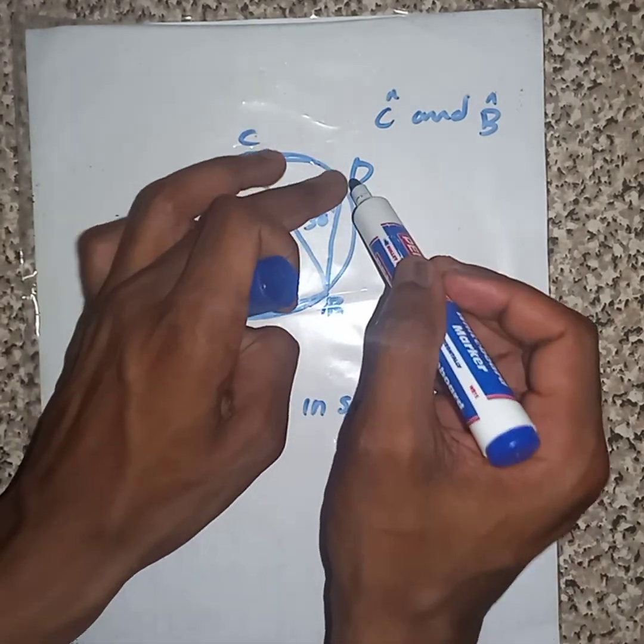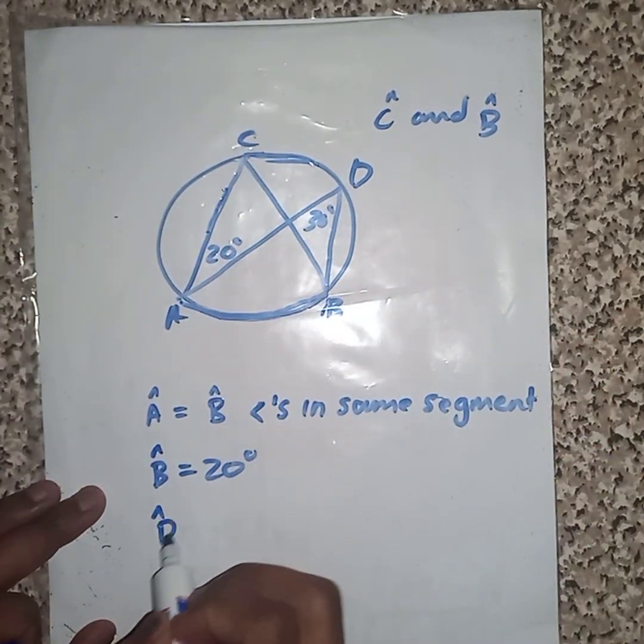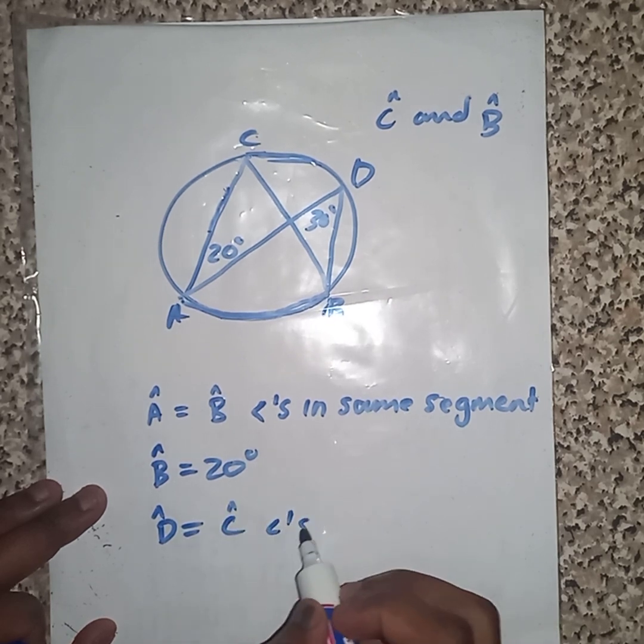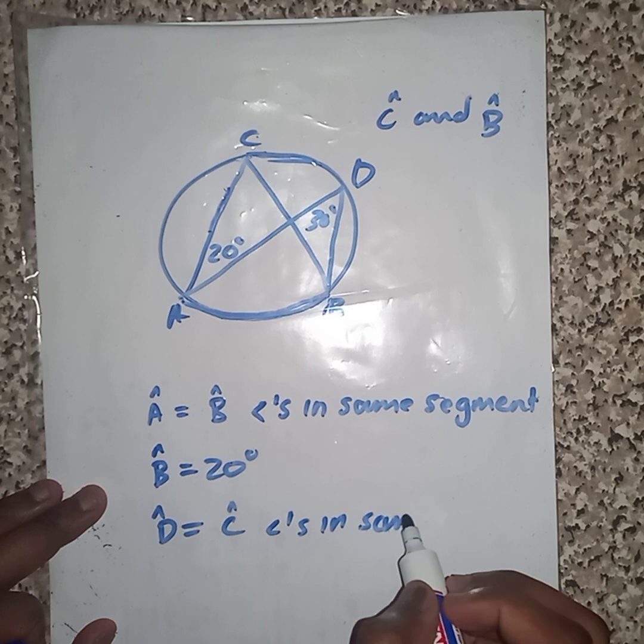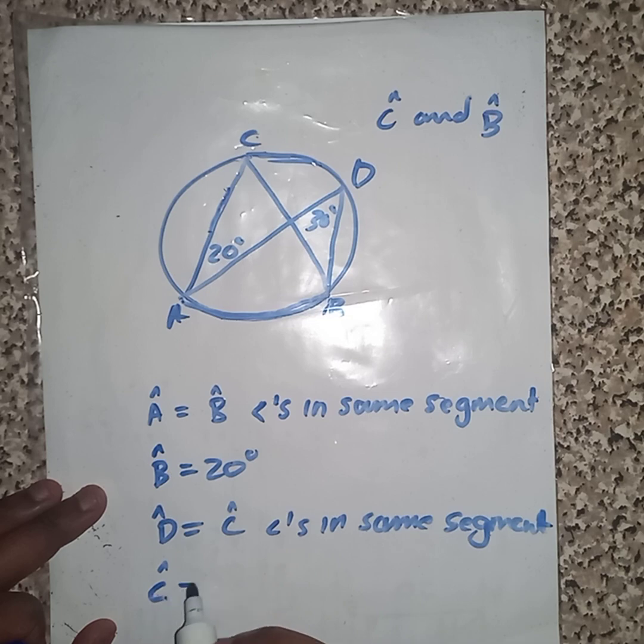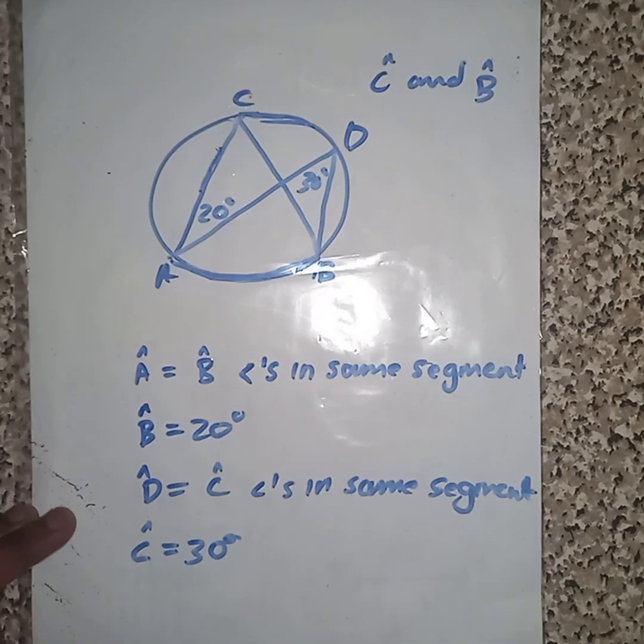C also subtends D, then angle D will be equal to angle C. Same reason: angles in a same segment. And I'm going to get 80 degrees. So simple.